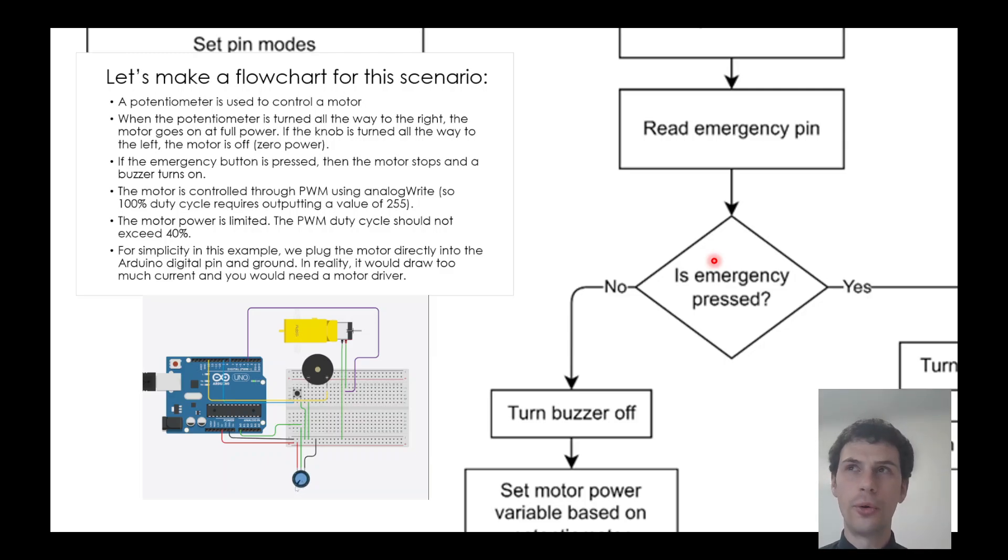A diamond for a decision. This is a decision, or in code it would be an if statement. I'm checking if the emergency button is pressed. If the answer is no, I go onto this branch. If the answer is yes, I go onto that branch. Important, note that these branches are labeled to show which is which.